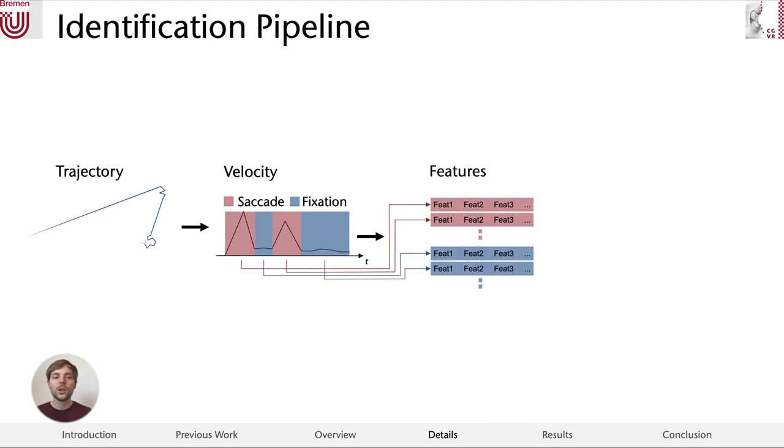For each saccade and each fixation, we build an individual feature vector. These vectors are then fed into the classifier. Actually we use two classifiers, and one classifier predicts the user for each saccade and the other one for each fixation. This is important as the saccades and fixations have vastly different feature scalings. The predictions are then accumulated to get a final prediction for the trajectory. In our work, we found that averaging the prediction works quite well.